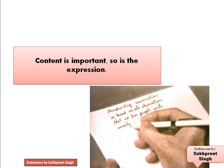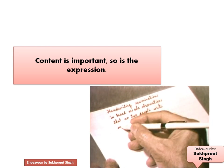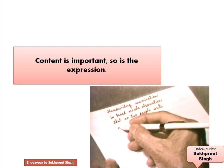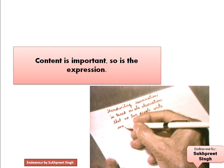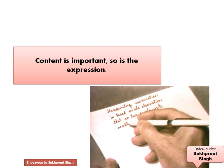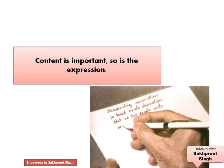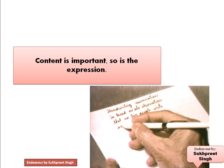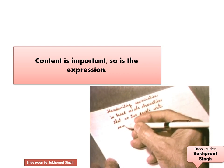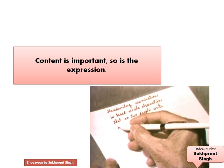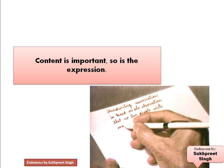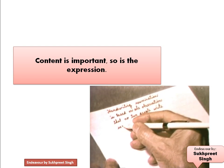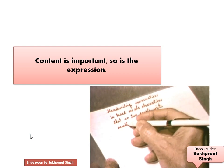Almost all the time, article writing is about some issue or something quite common. For example, in the grade 12 board examination, the article writing topic was on water scarcity. Sometimes it's on cleanliness, pollution, and so on. So students should be aware of the latest updates related to these issues or whatever the topic of article writing is.